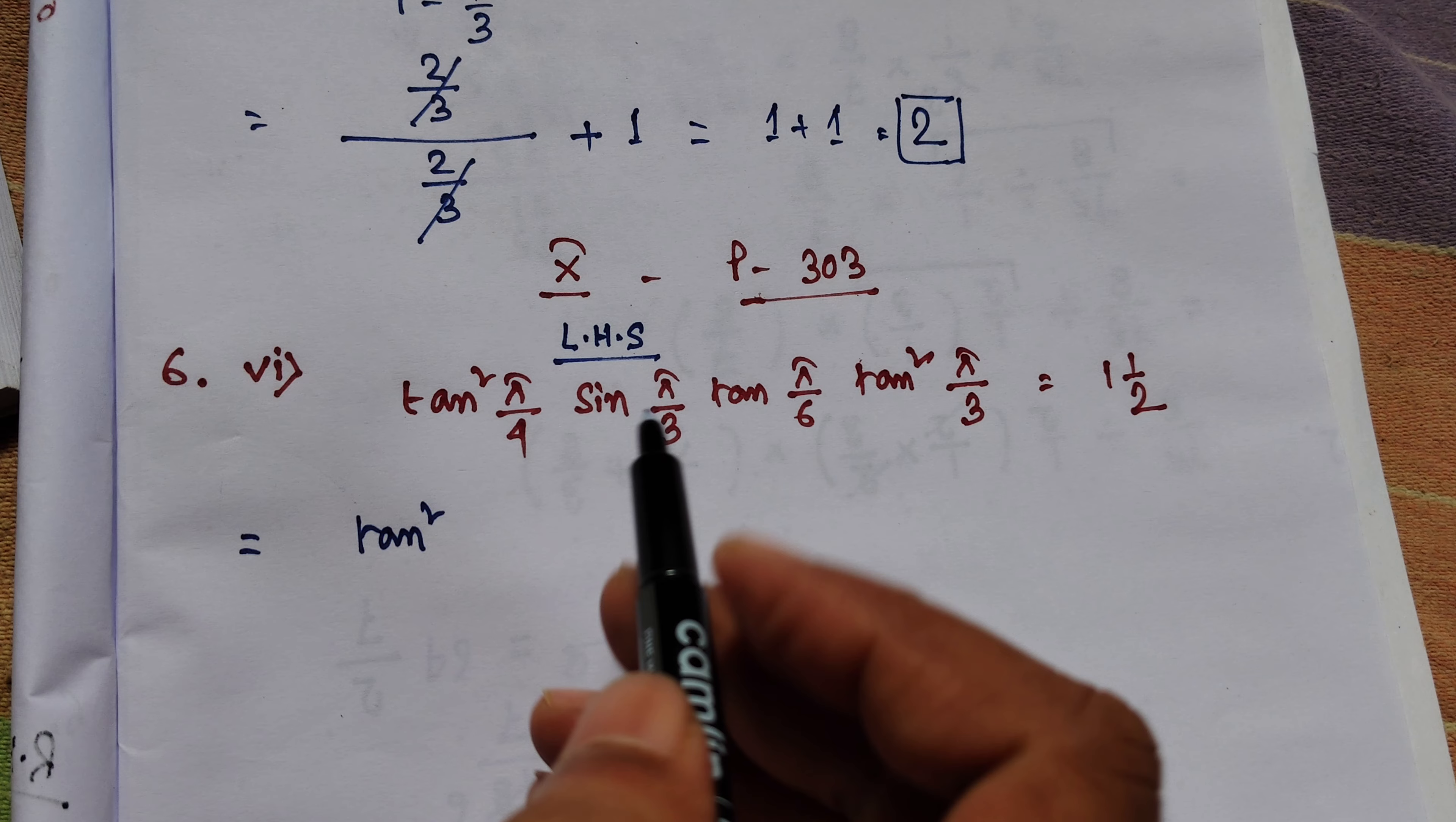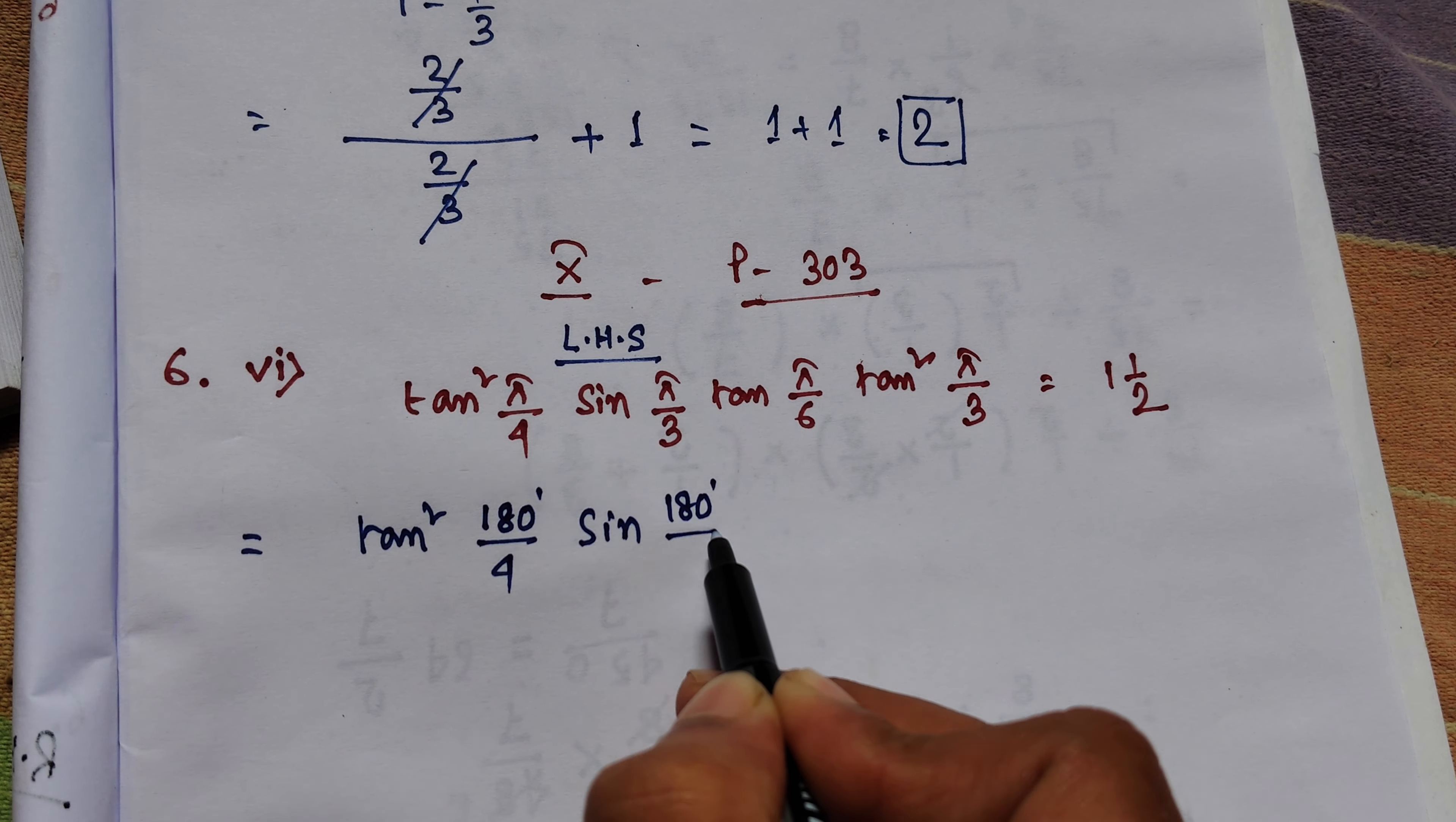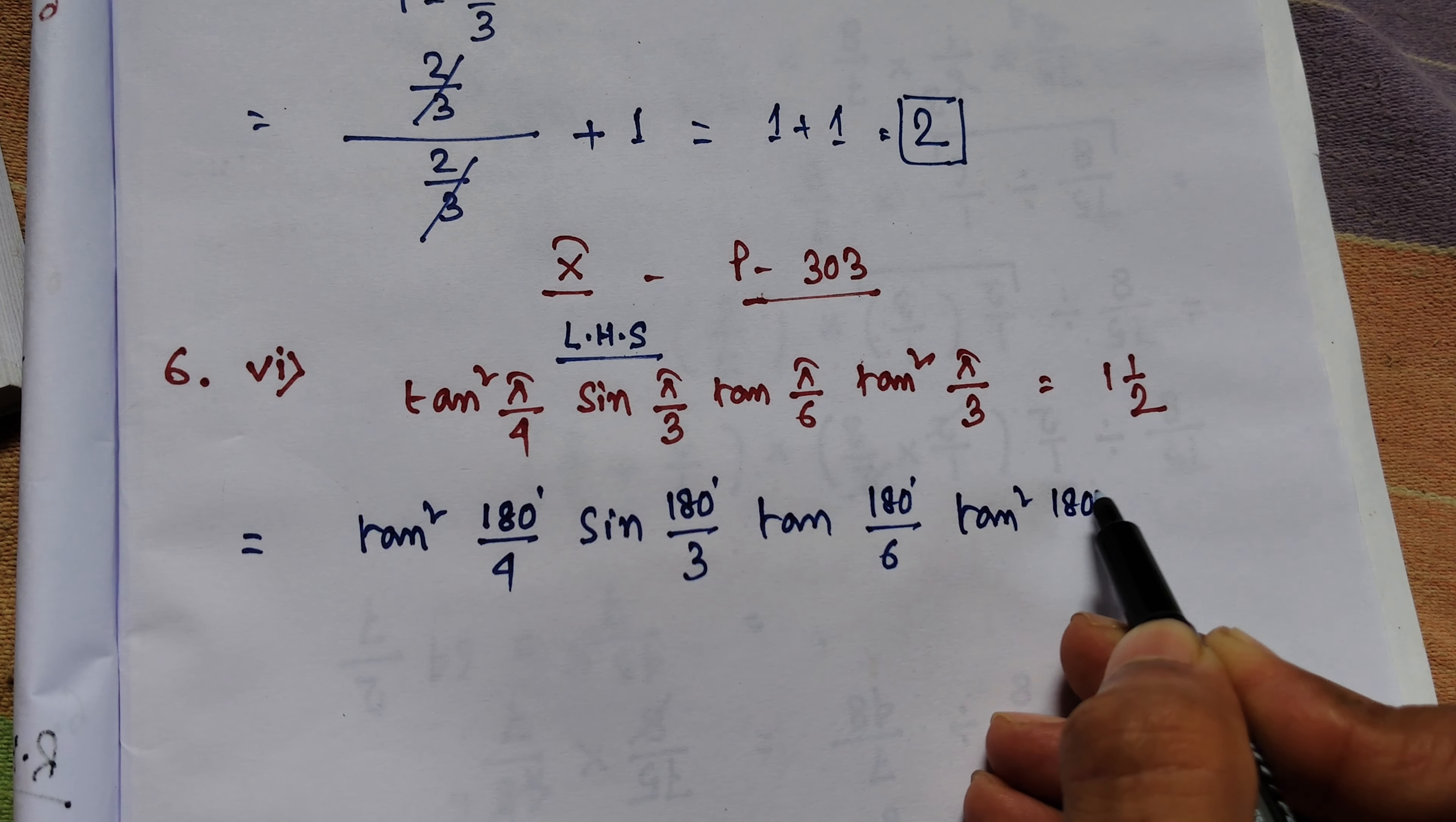What do you think of this pi? The pi is 180 by 4. The pi is 180 by 3. The pi is 180 by 6. The pi is 180 by 3.